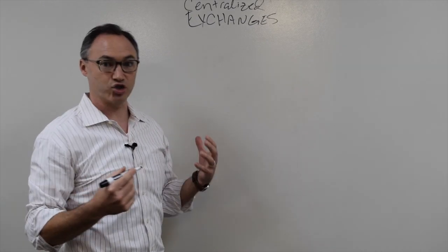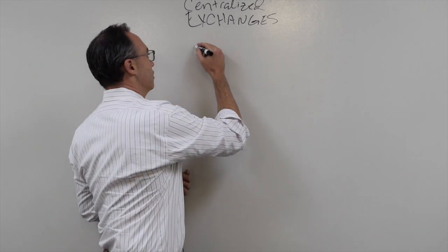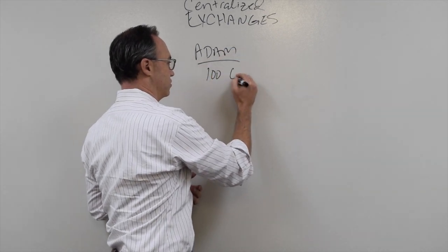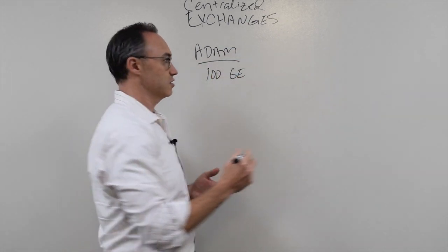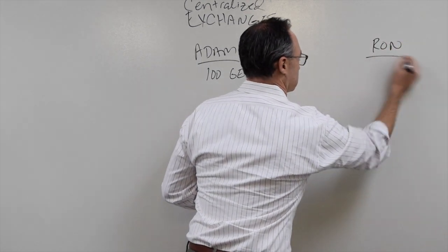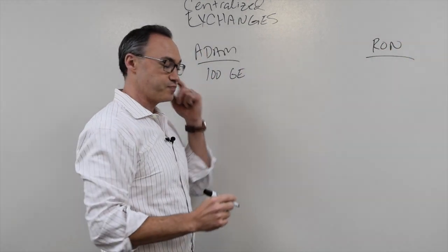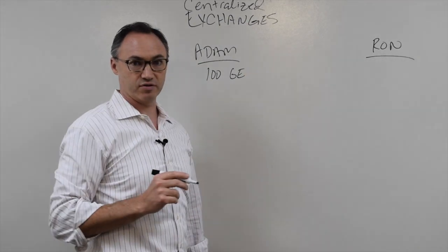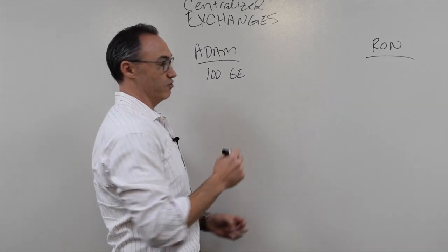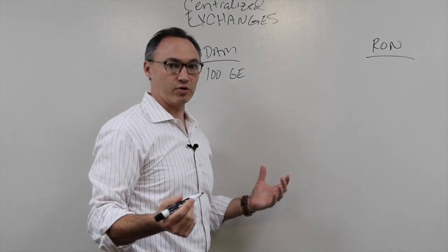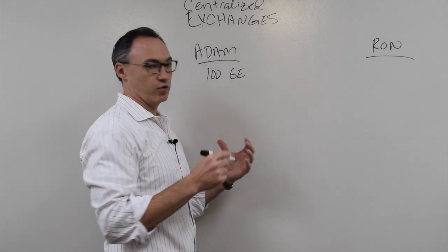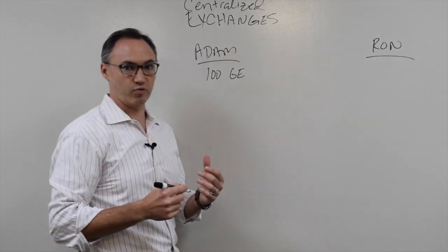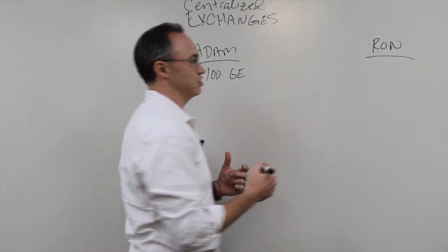So where did centralized exchanges come from? Let's go back to our example. Adam has 100 shares of GE stock, and Ron does not at the moment. So let's say back in the day Adam wanted to sell his 100 shares of GE stock to Ron. The first question is, how much is Ron going to pay for the GE stock? They have to agree to some number. Let's say they agree that Ron is going to pay $10 for every share of GE stock.